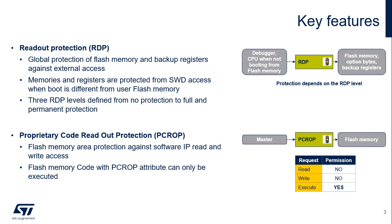Three levels of RDP protection are defined: from level 0, which offers no protection at all, to level 2, which has full and permanent protection. Protection levels will be described in the following slides.